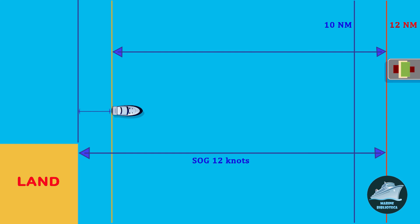Because of the 2-knot current from astern, the boat would move 2 nautical miles in the direction of the ship. The distance covered by the ship with respect to the floating boat will still be 10 nautical miles, so the speed through water will still be 10 knots.